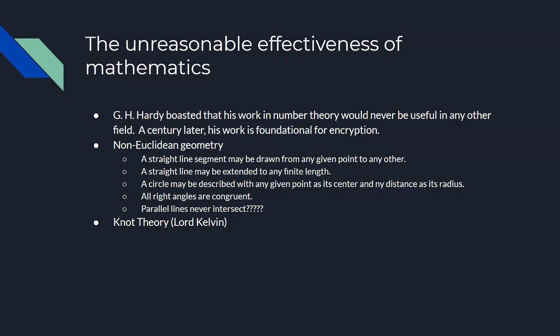Let me give three examples of this unreasonable effectiveness. First: British mathematician G.H. Hardy actually boasted that his work in number theory would never be useful in any other field — and he was proud of that. He defied anyone to show him how his work would ever be applied elsewhere. Well, a century later, his work is foundational for cryptography — absolutely essential for encryption and decryption. So that's a humorous example.